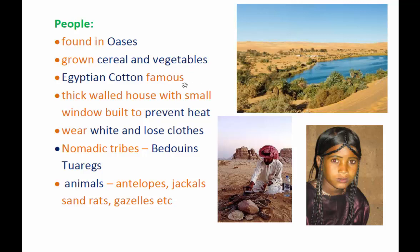They build this type of house in order to prevent the heat of the sun. As you can see from the picture, people usually wear white and loose clothes. There are two important nomadic tribes in the Sahara Desert: the first one is the Tuareg, and the second is the Bedouin. These are two important nomadic tribes — they don't have a permanent place; they go from one place to another in search of food and fodder for their animals.